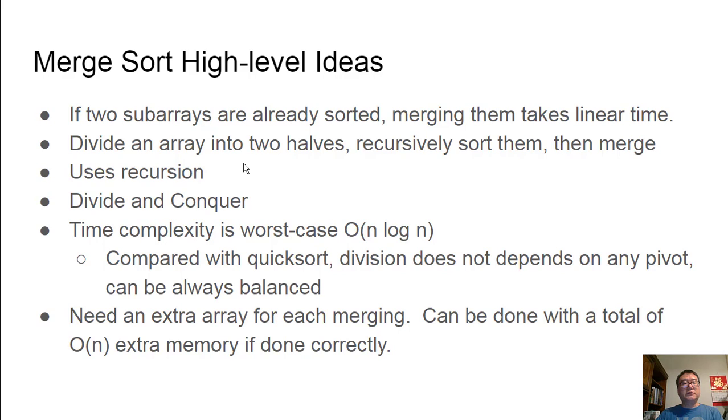This also uses recursion because we need to recursively solve the two halves. Recursion works because there's a base case. When we are dividing until there's only a single element, then it's already sorted. In fact, when there are just a few elements left, we can stop using this idea and use simpler sorting algorithms like insertion sort, which while it's worst case in quadratic time, when there are just a few elements, it's actually as fast as any other sorting algorithm. So essentially, when we divide the array into small enough parts, then we know how to sort it.